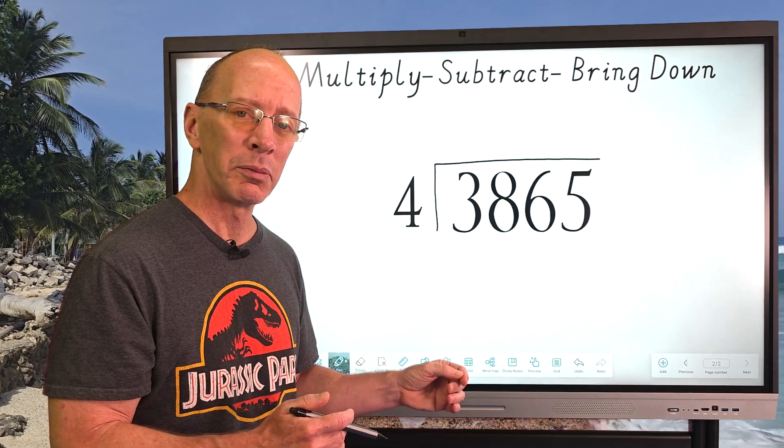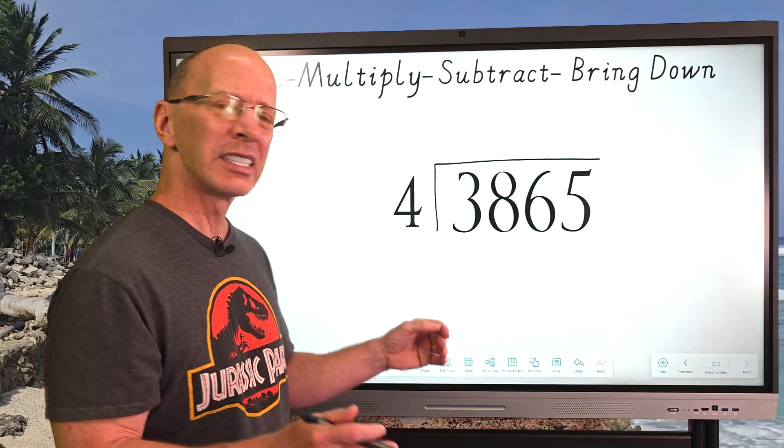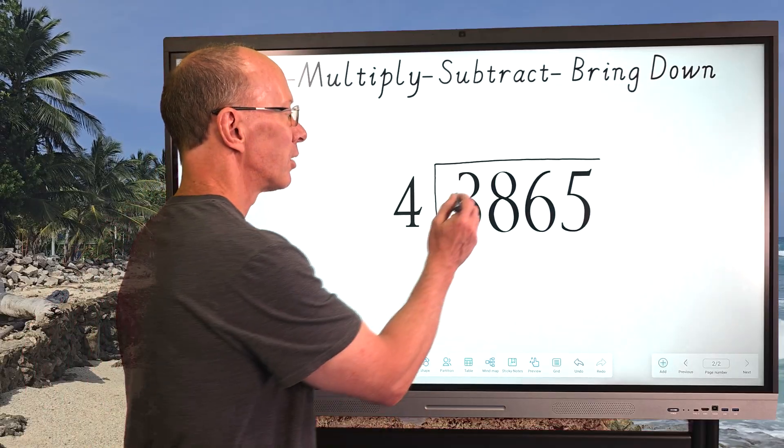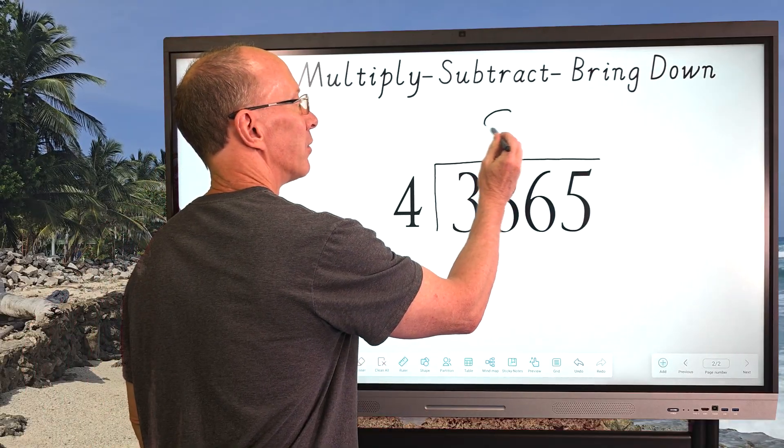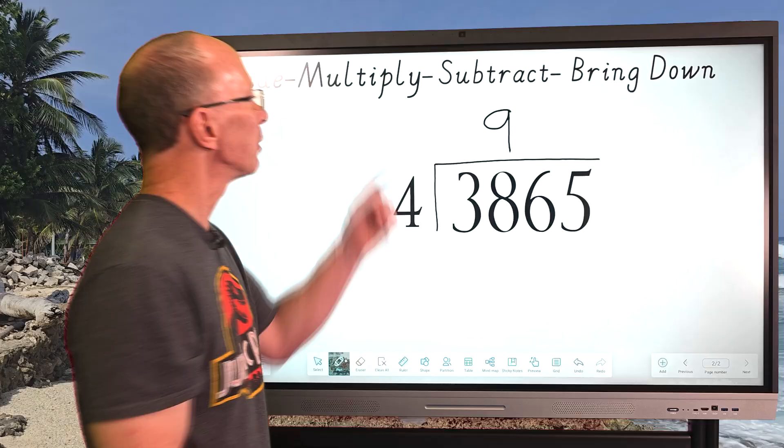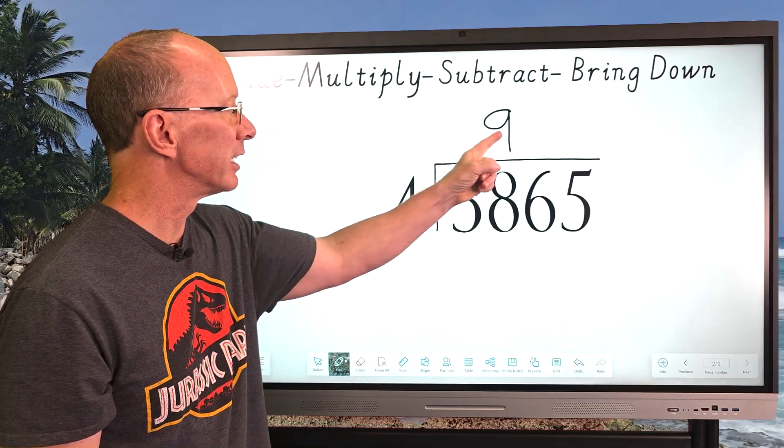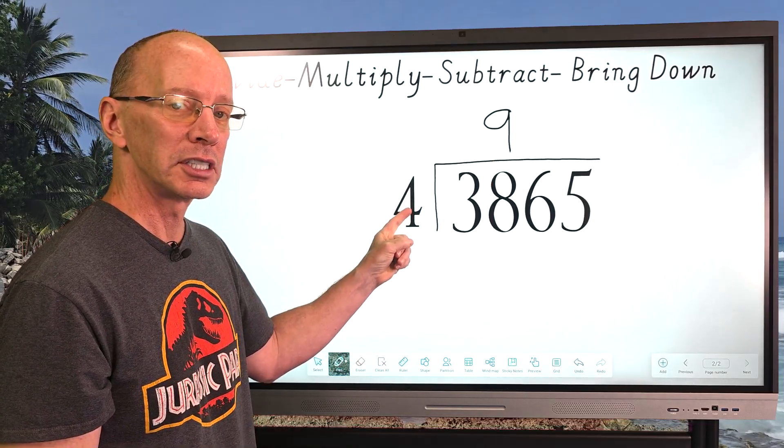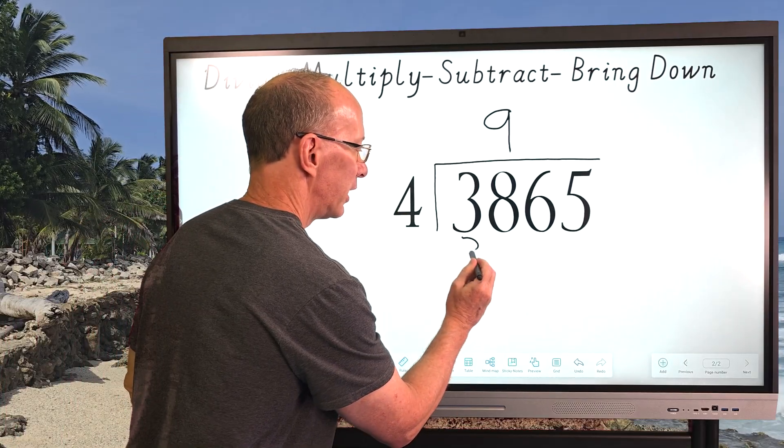So we're going to stick with nine, nine times four. So I'm going to go ahead and put the nine right here. And my next step is to multiply. So I'm going to take nine times four, which is 36, and then put the 36 right here.